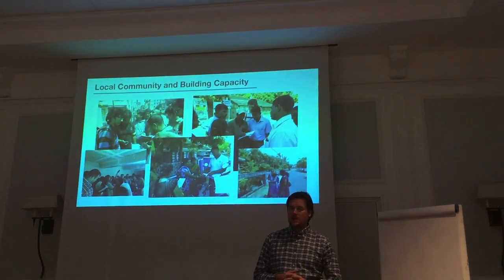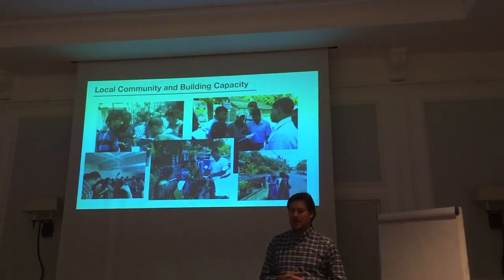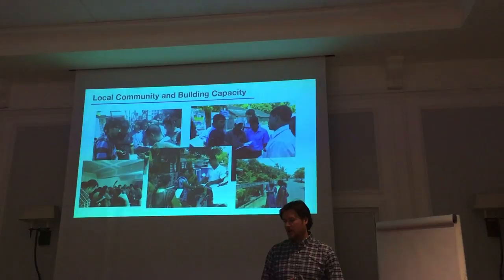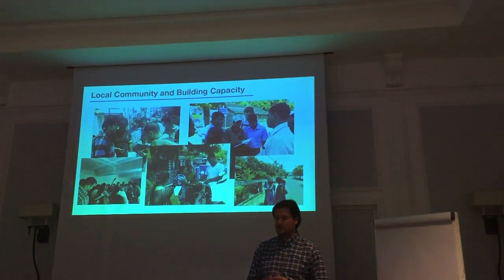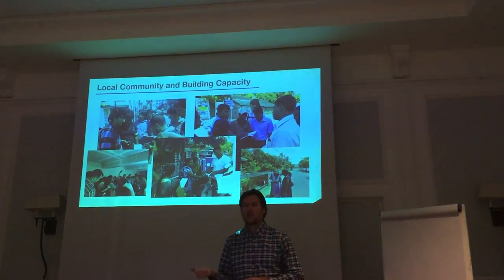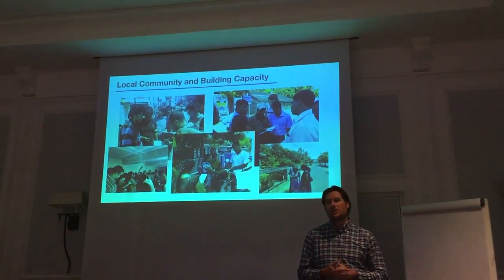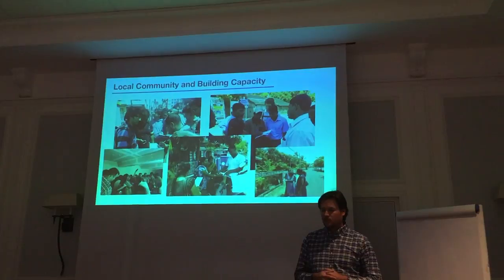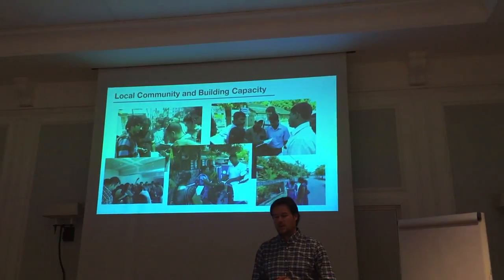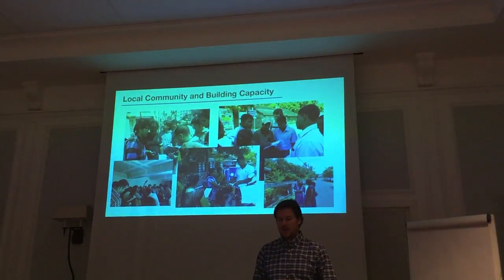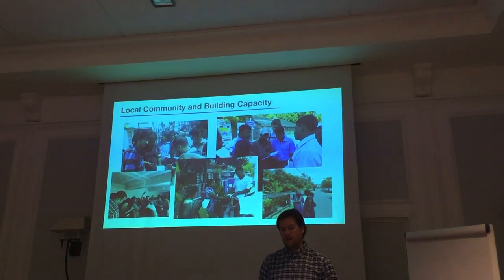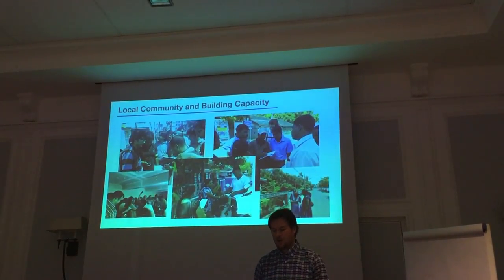These projects cannot be successful unless there is real engagement with the local community. One of the key strategy points in many OpenDRI projects is to engage local communities both for collecting data using OpenStreetMap tools, and also for understanding how to use and analyze data available through GeoNode. This only happens when you build local capacity for people to understand the information available, how to contribute to it, and how to use it.